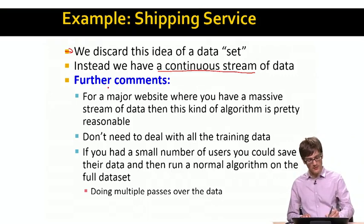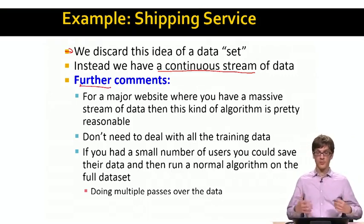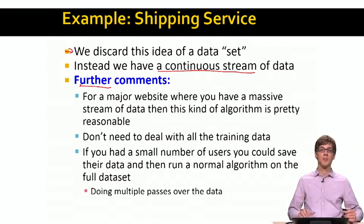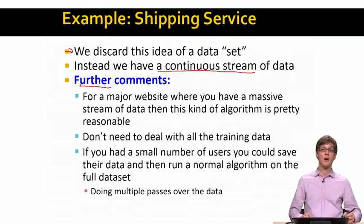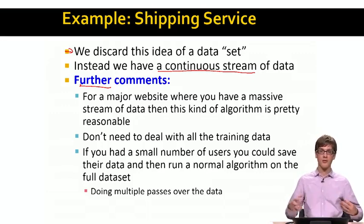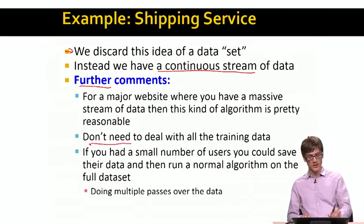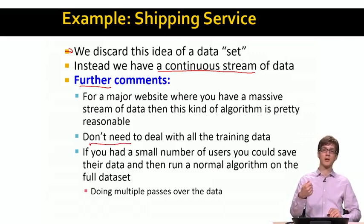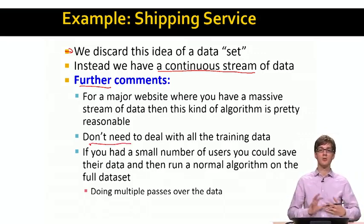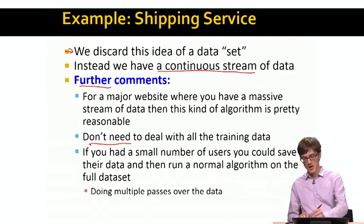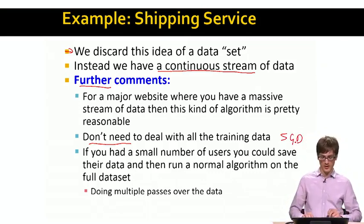There are further things to consider. On a major website we would have a massive stream of data, and as more data comes in, our model gets better and better. What is also good in this online learning setting is that all we need to do is look at one example at a time, so we don't need to deal with all training data at once — this is another benefit of stochastic gradient descent, where we are only looking at one data point at a time.